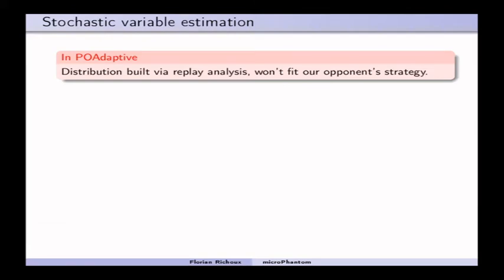A second improvement is about stochastic variable estimation, and this is a major improvement. So, we have stochastic variables that represent the number of enemy units of each type, light, heavy, and range units.